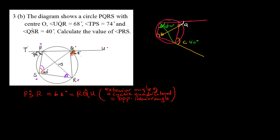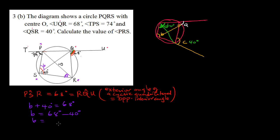Now, since angle PSR is 68 degrees, we can calculate the angle PSQ. Let's call this angle B. It means B plus 40 degrees equals the total angle PSR, which is 68 degrees. So B equals 68 minus 40, which gives us 28 degrees.